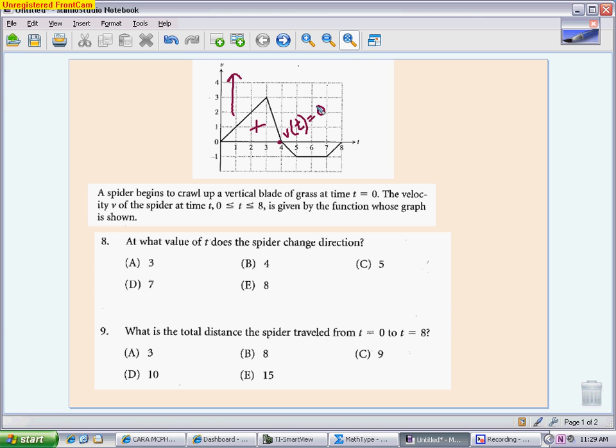Then, at 4, we have a velocity of 0. What that's telling me is I'm changing directions. Now, the rest of my graph is below the x-axis, so now my spider is moving down because it has a negative velocity. So the answer to the first question is, what value does the spider change direction? That happens at 4 seconds, and you're looking for those intercepts, those places where the velocity is 0. Those are the places where we switch directions. You're looking for when your velocity graph crosses the x-axis. So number 8 is pretty easy. There's not a lot of work to be done there.